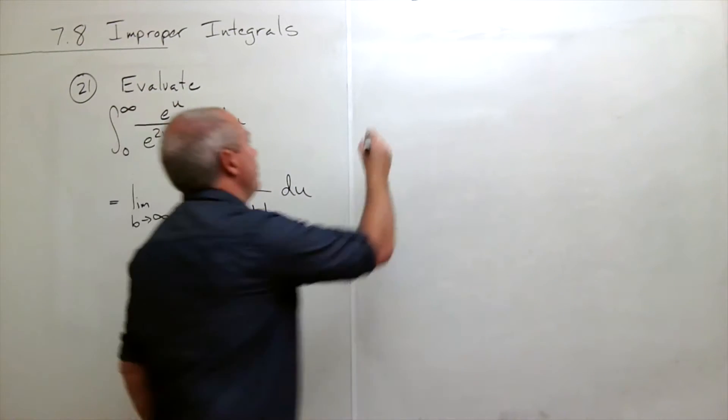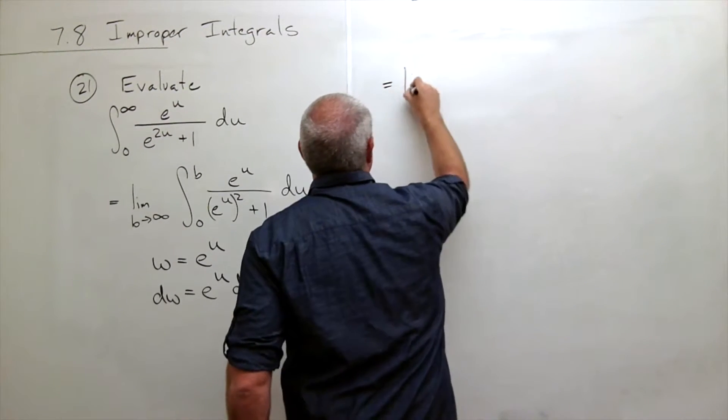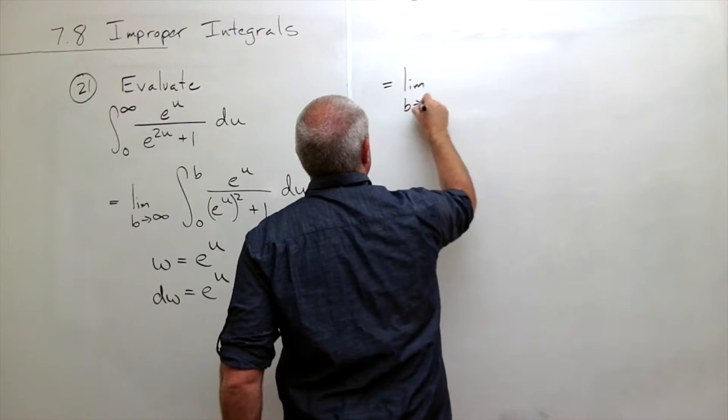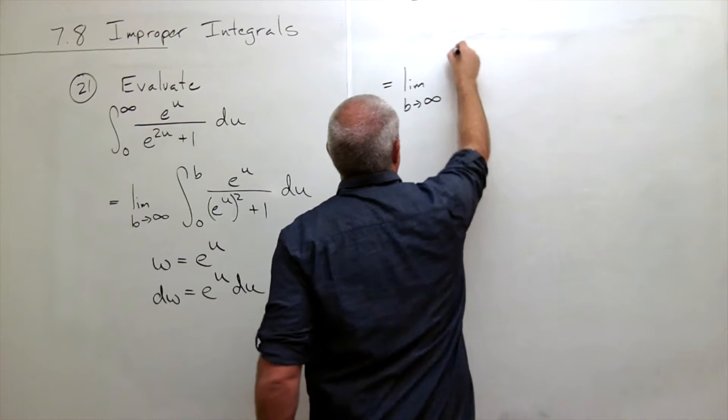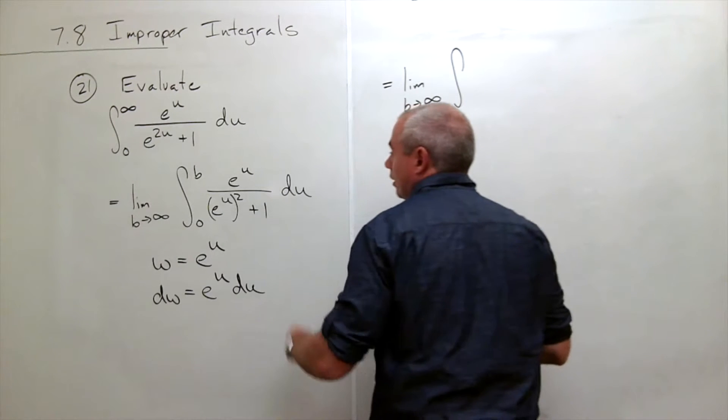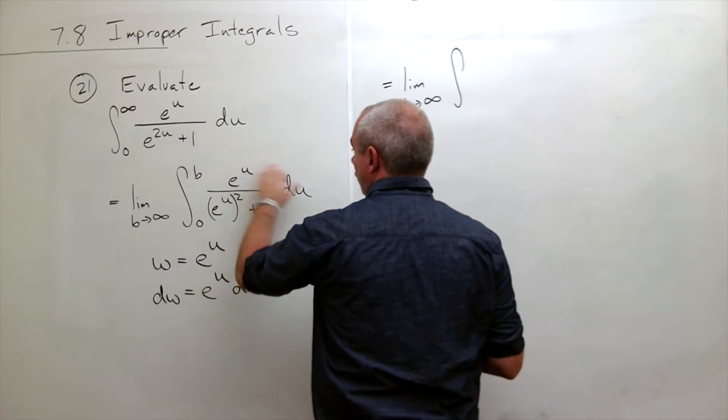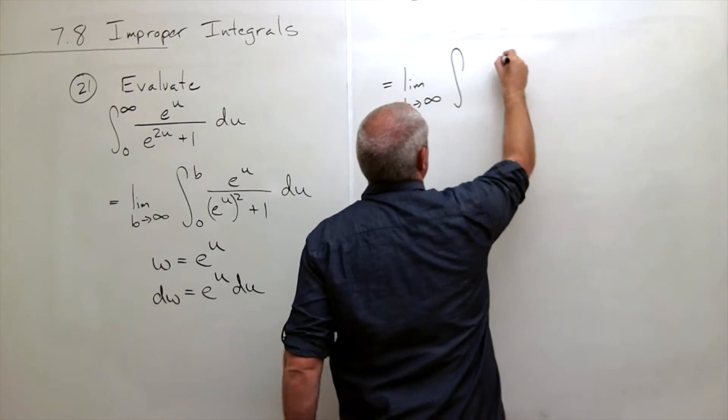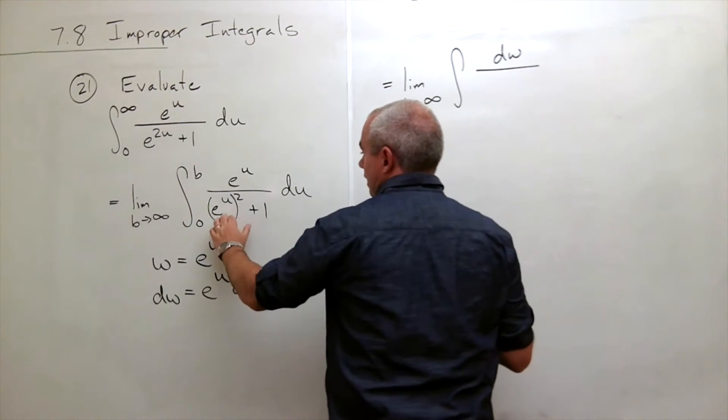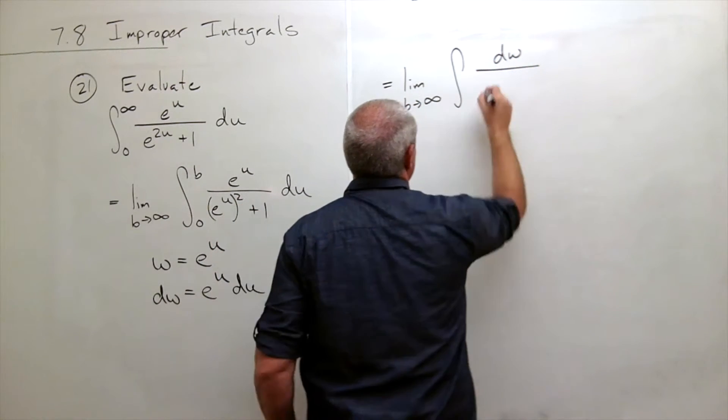So now I can rewrite this integral as the limit as b goes to infinity of the integral of, this becomes the whole top is dw and the bottom is w squared plus 1.